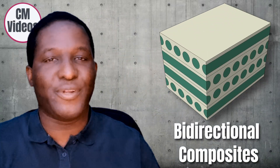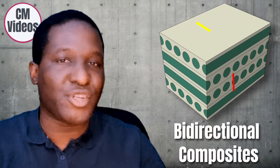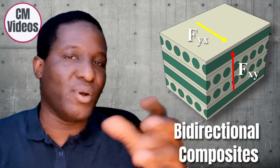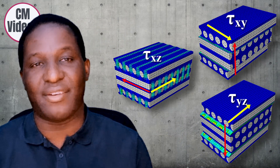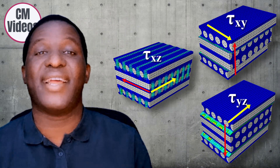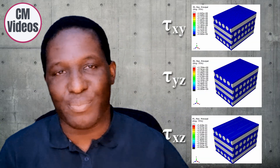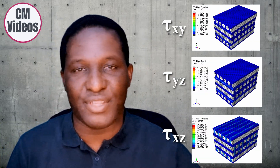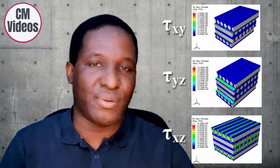You've run a simulation involving bidirectional composite and imposed pure shear stress loading on that structure. The final thing you want to do is look at the stress-strain data generated from that result, as well as the kind of simulation result you're going to get. This is what I'm going to be talking about in this video.